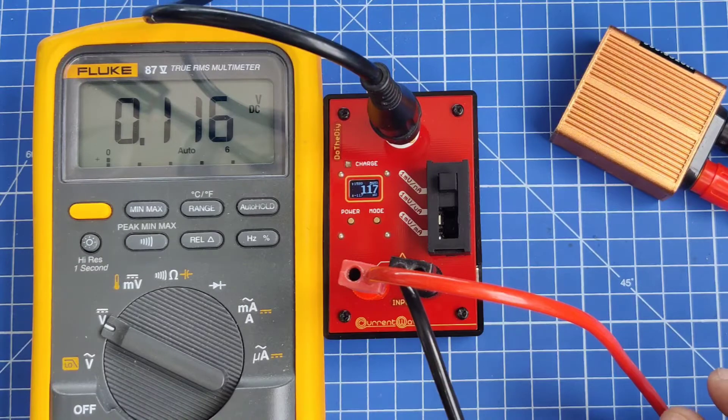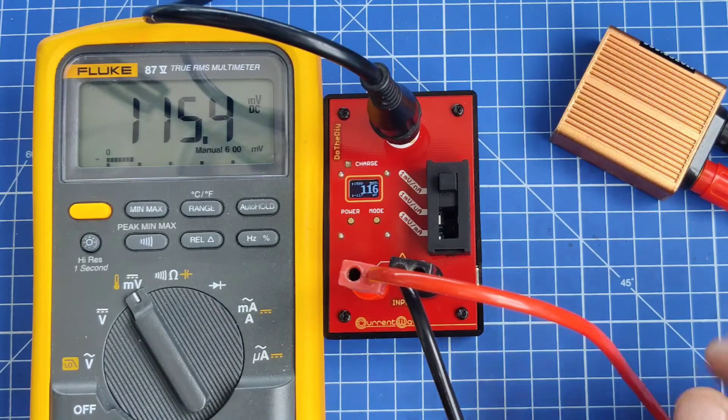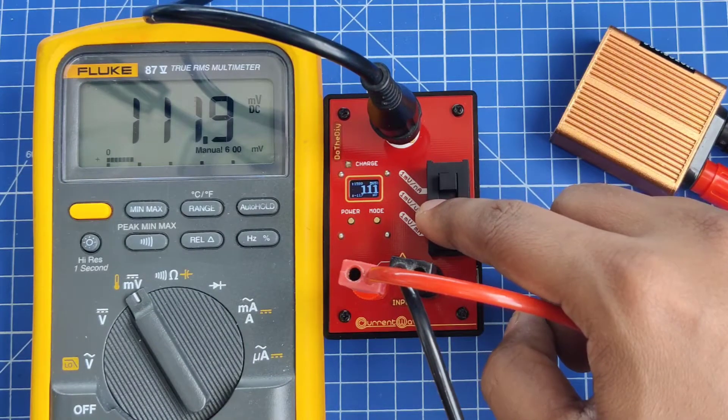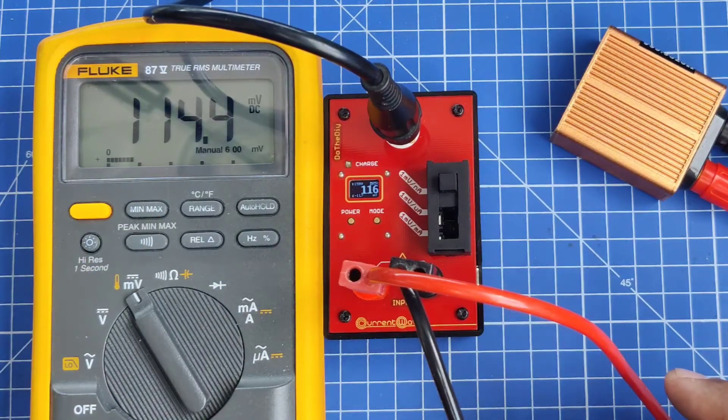Here you can see now we are measuring in nanoamp. Currently it's around 112 nanoamps and you can see both meters are showing the value now.